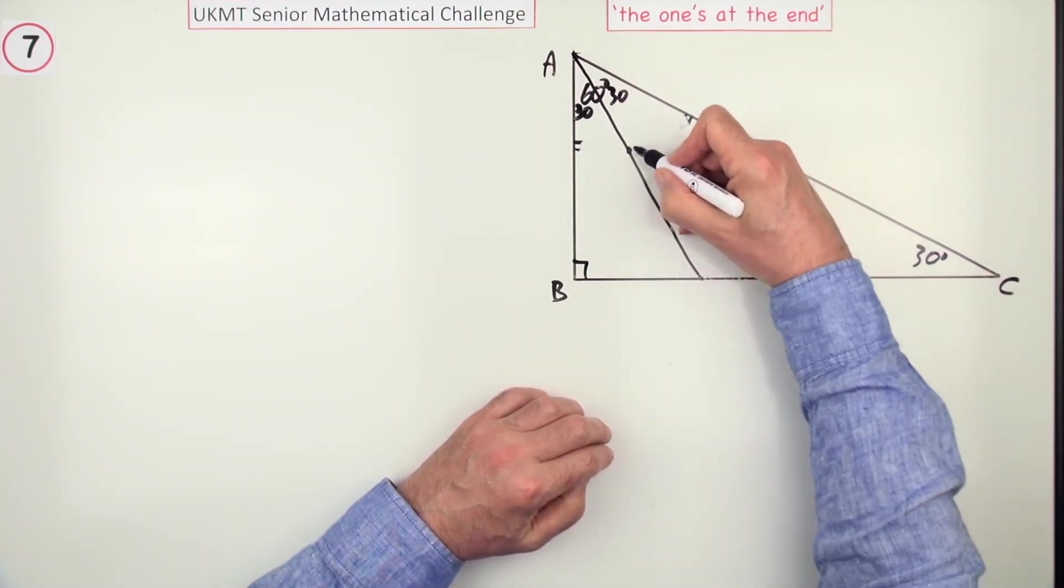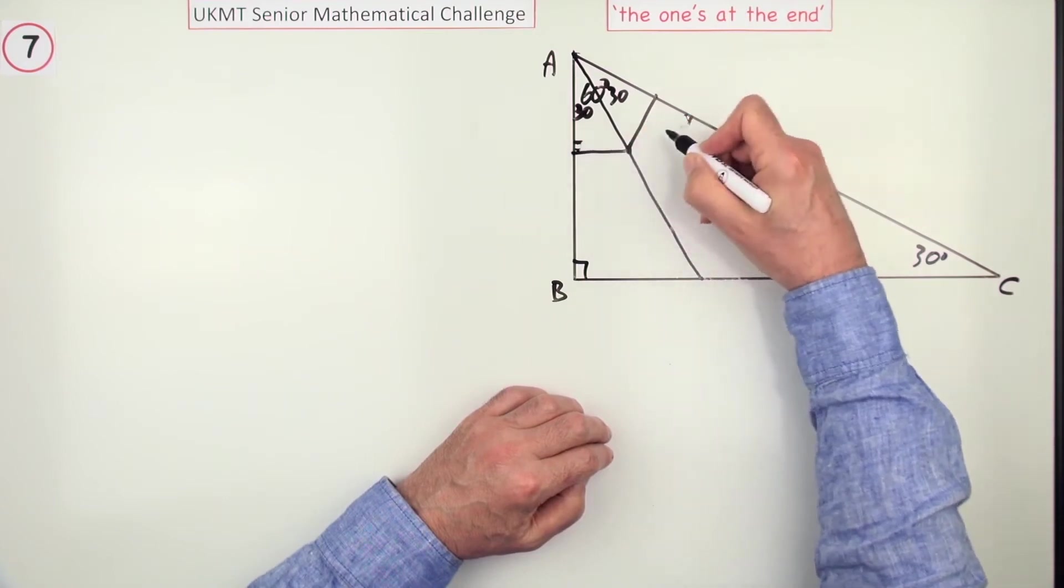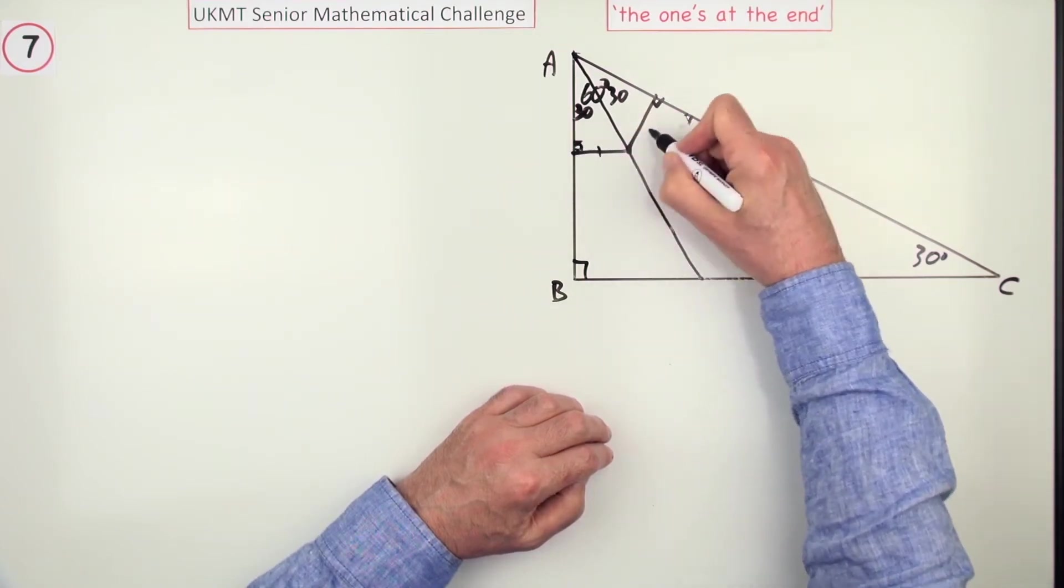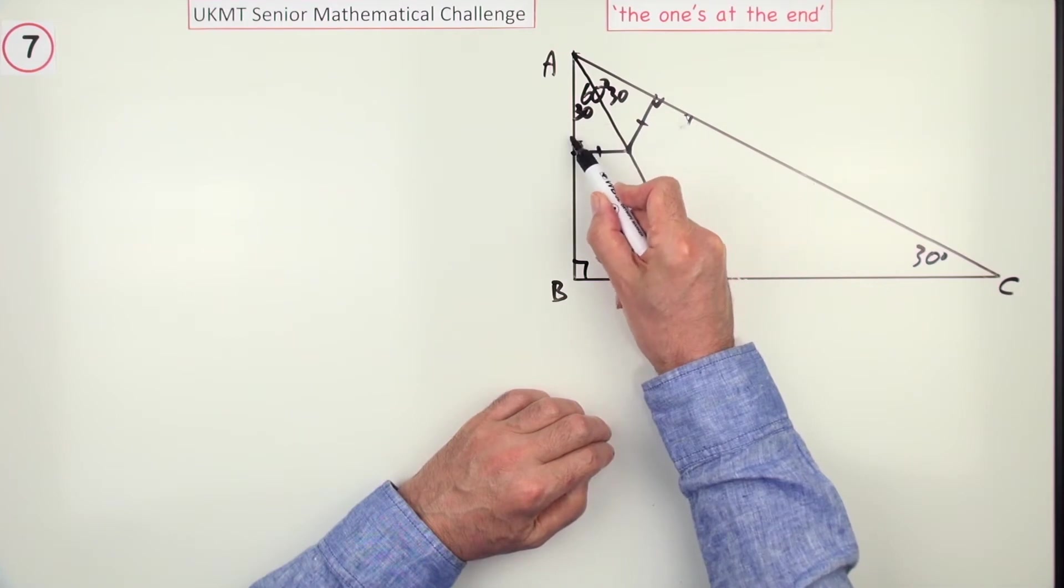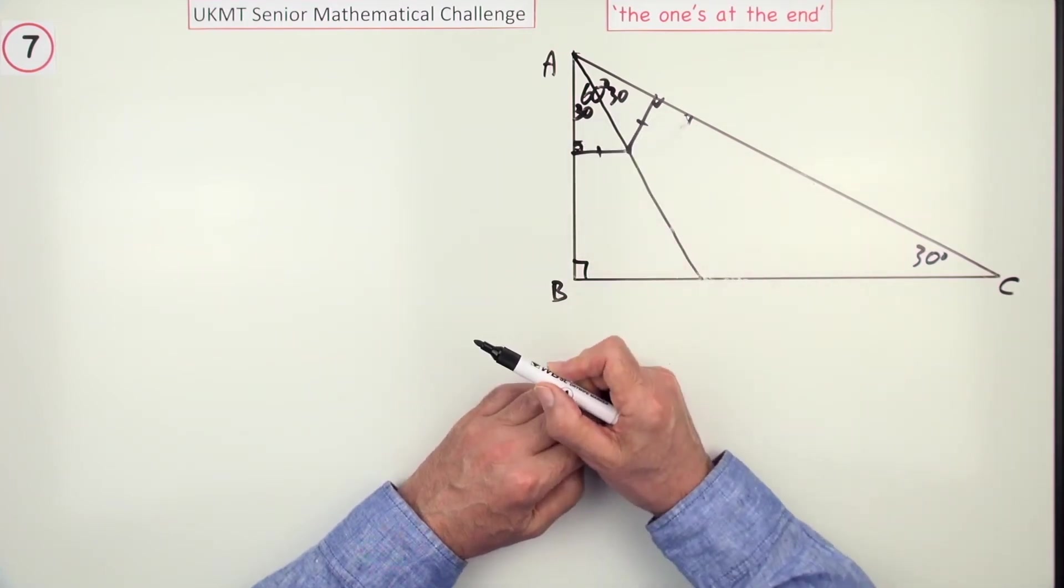Then, any point in that line will be the same distance on both sides. So, a point in this side would be closer to AB, a point in that side would be closer to AC.